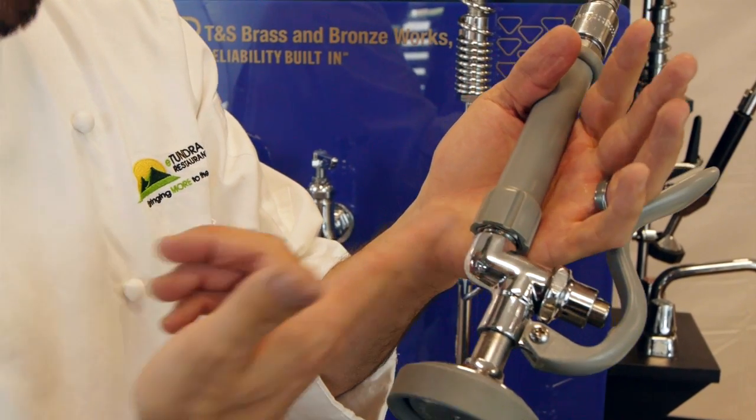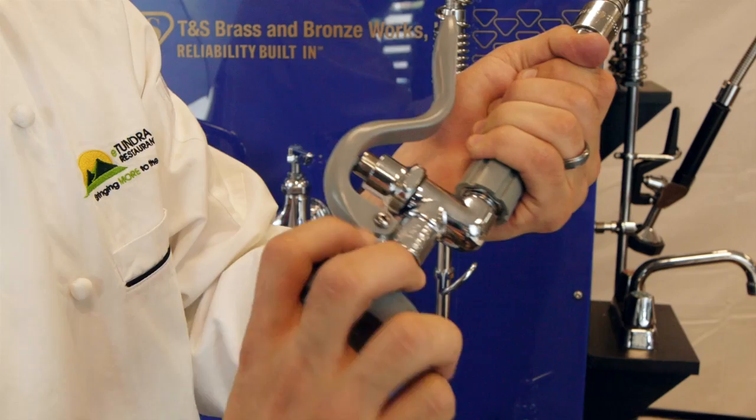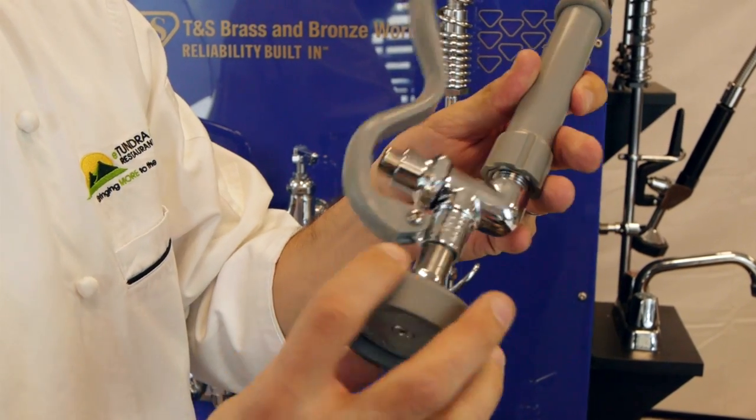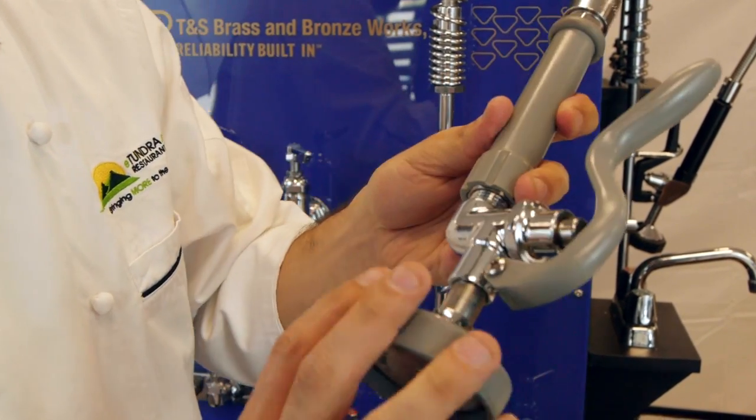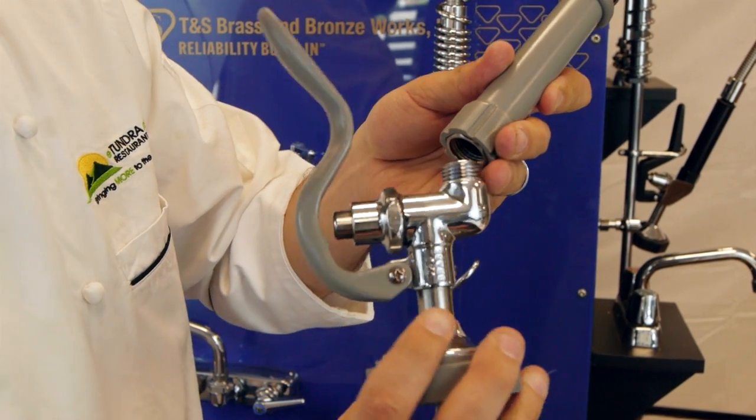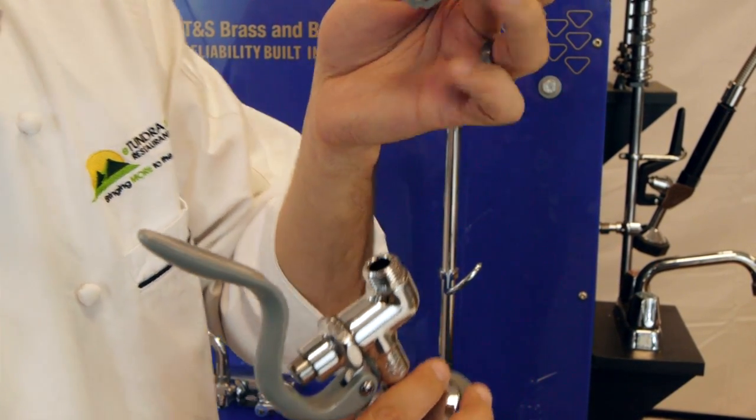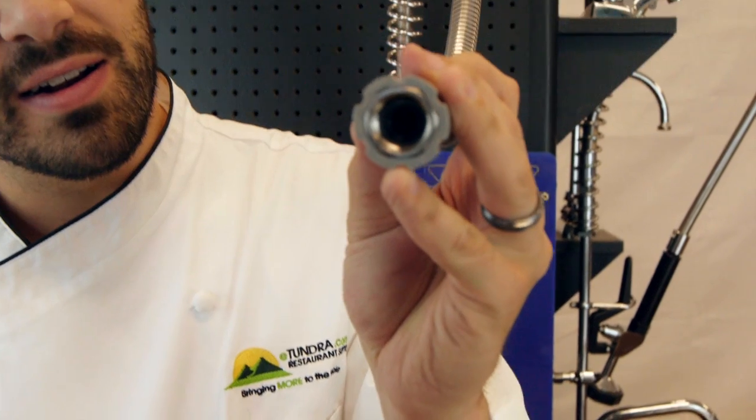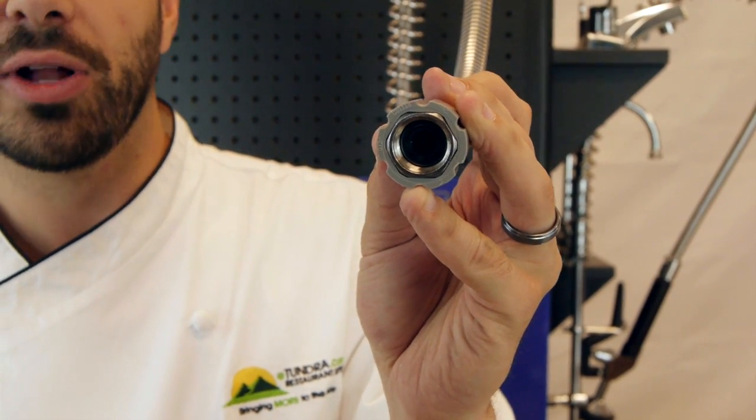Same thing applies to the bottom of the handle. If it was leaking there, go ahead and unscrew the bottom of the pre-rinse, and right in there, that washer will need to be replaced.